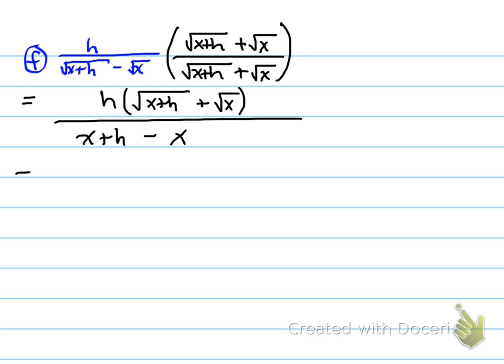So that will cancel, the h's will cancel each other out. So this h and this h will cancel because the x minus x just cancels out to h. These two h's will cancel, and you'll end up with root x plus h plus root x.